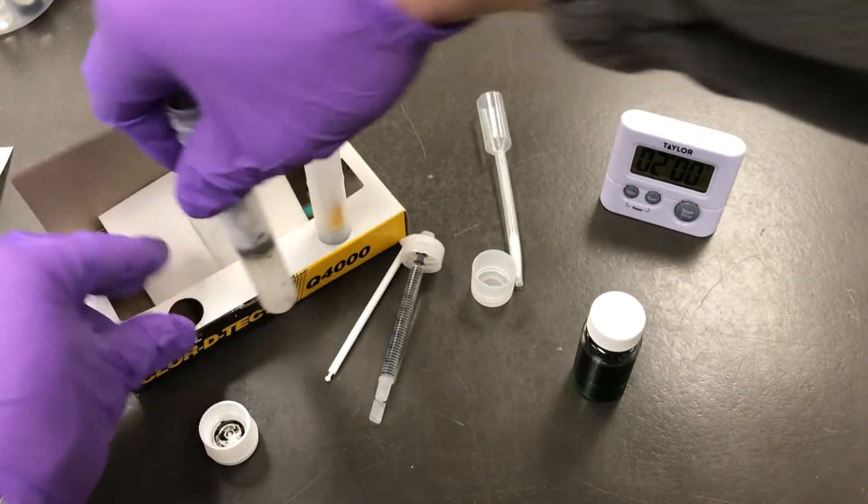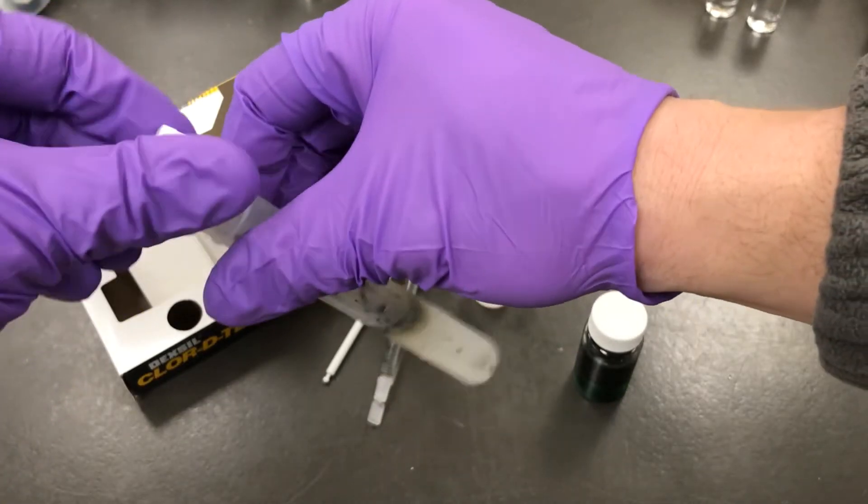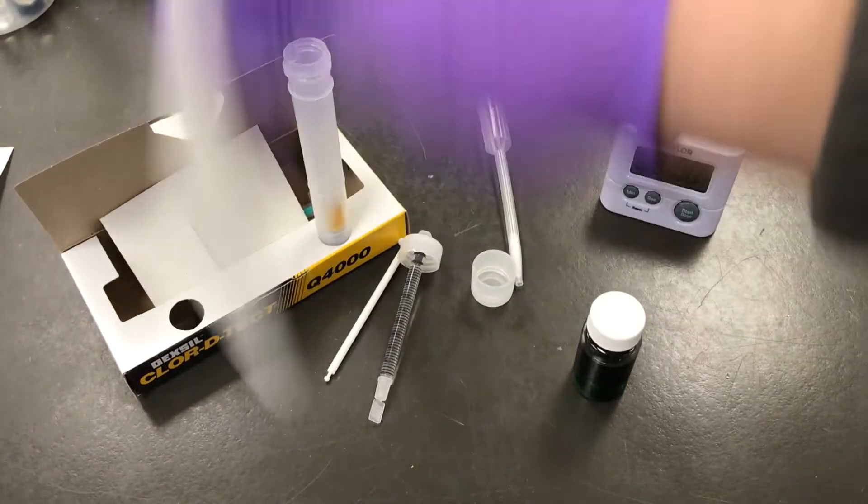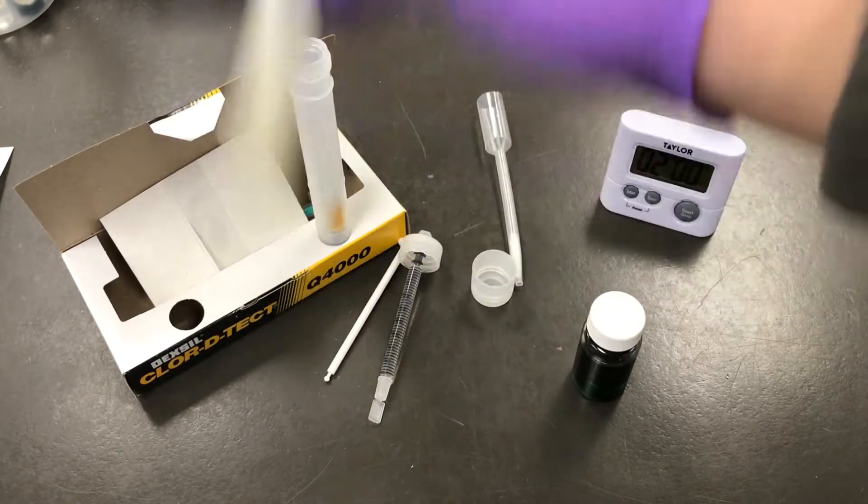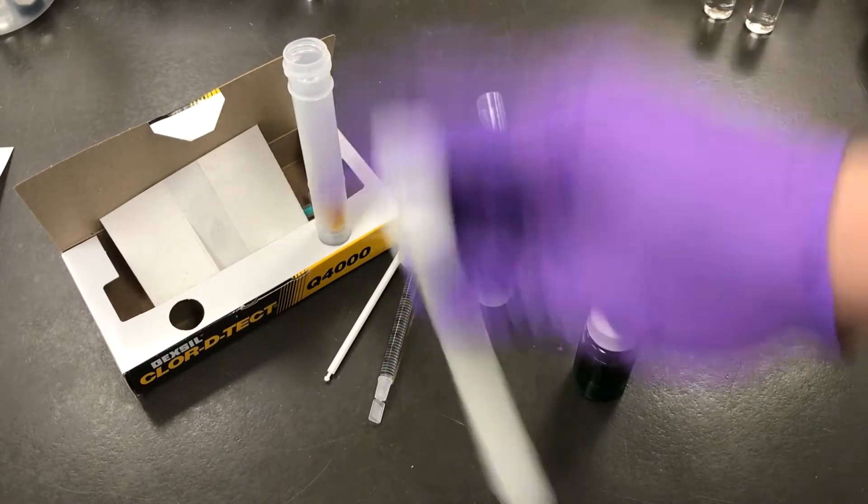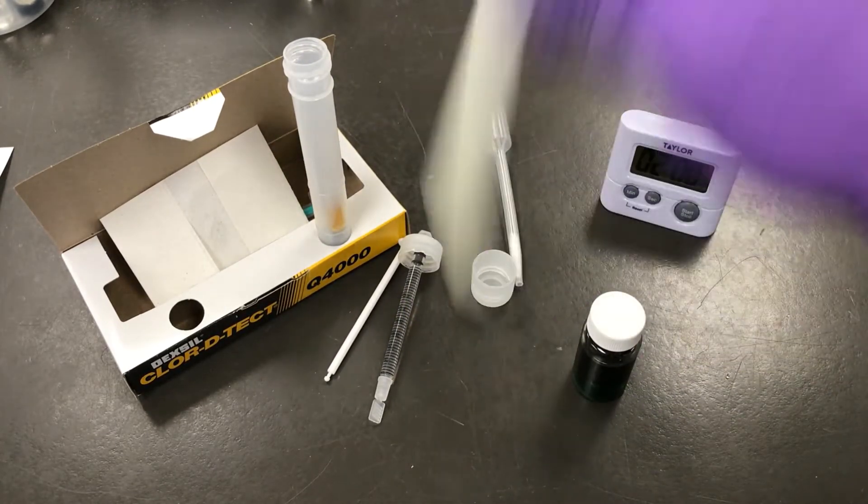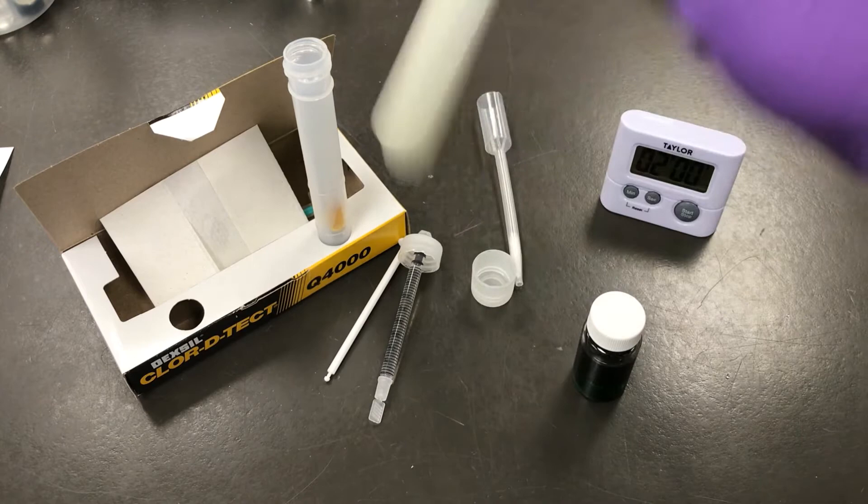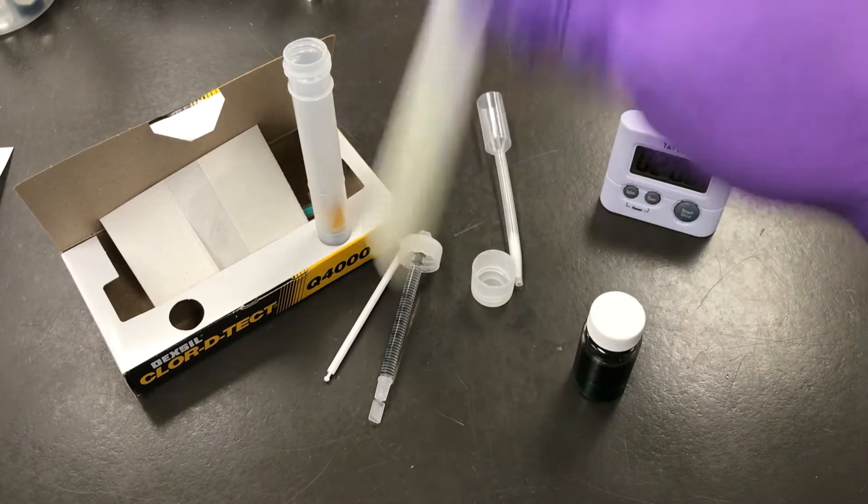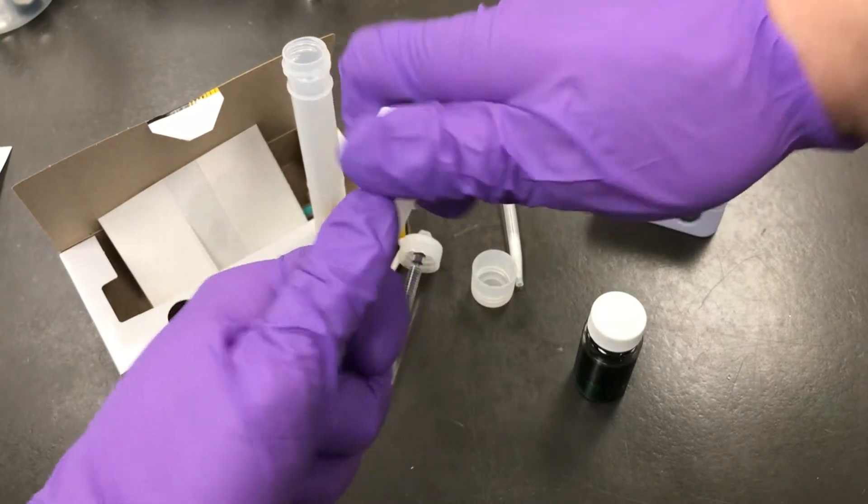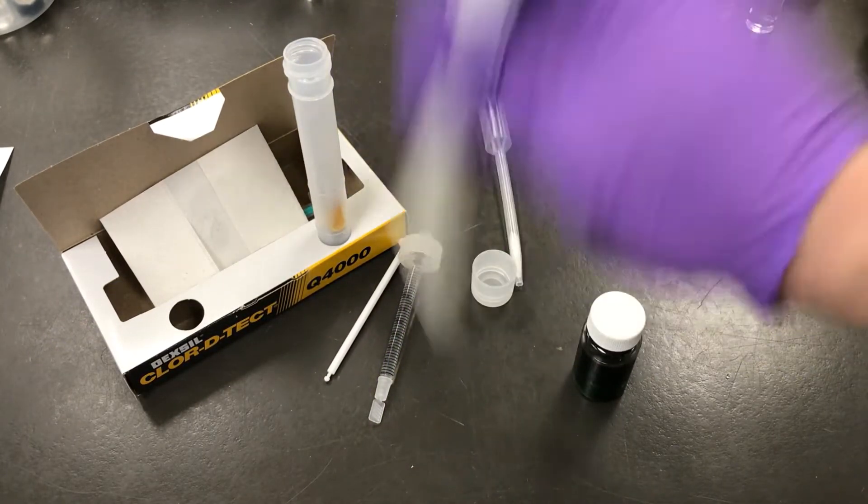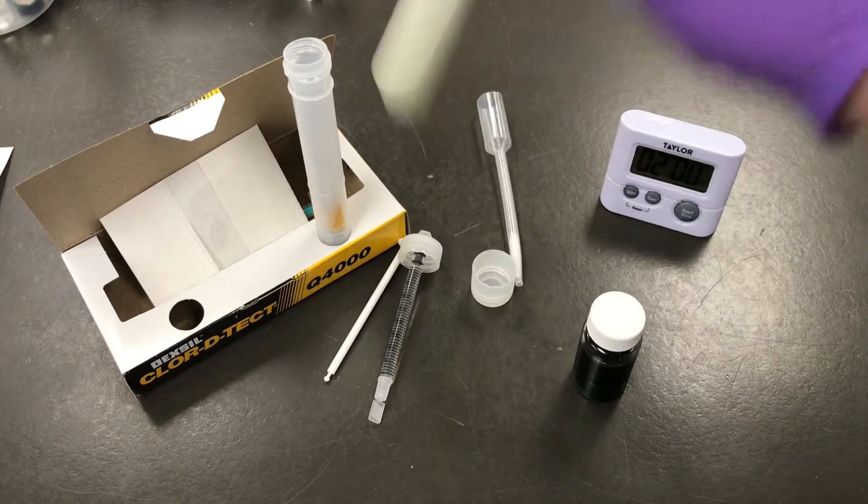Now replace the cap on test tube 1 and shake it for 10 seconds. Vent the pressure in the test tube by cracking the top, retighten, and shake it for another 10 seconds.